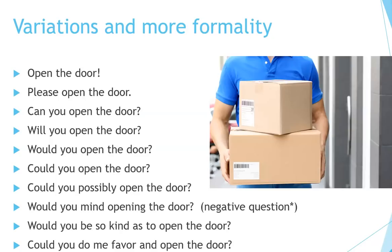Variations and more formality. In English, usually longer sentences are more polite and more formal. Look at the examples below. 'Open the door.' 'Please open the door.' 'Can you open the door?' 'Will you open the door?' 'Would you open the door?' 'Could you open the door?' You see how they're becoming more and more polite as we go down the list. 'Could you possibly open the door?' 'Would you mind opening the door?' — this is a negative type question which we will discuss later. 'Would you be so kind as to open the door?' 'Could you do me a favor and open the door?' So as it gets longer, it gets more formal and more polite. Something like 'Would you be so kind as to open the door?' would be very polite and used in a formal situation.